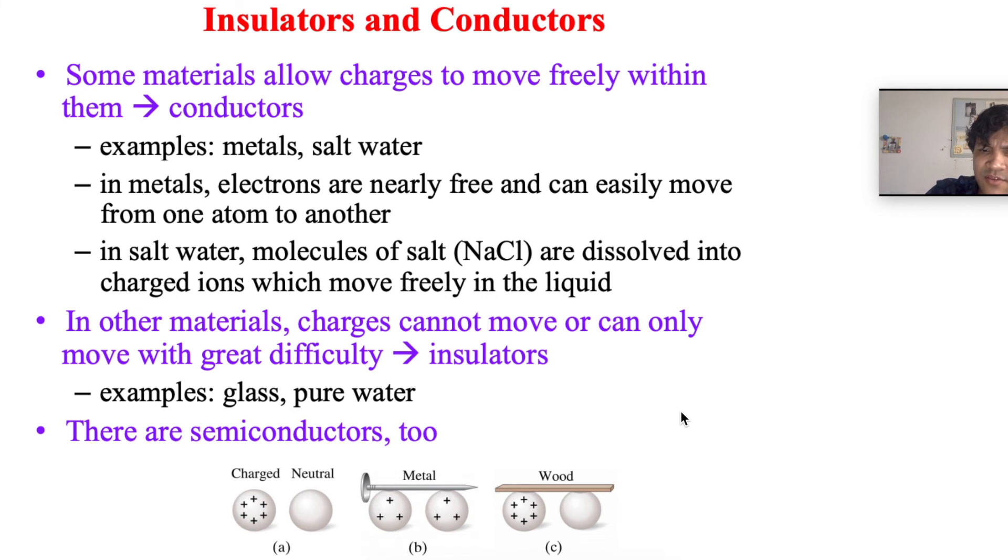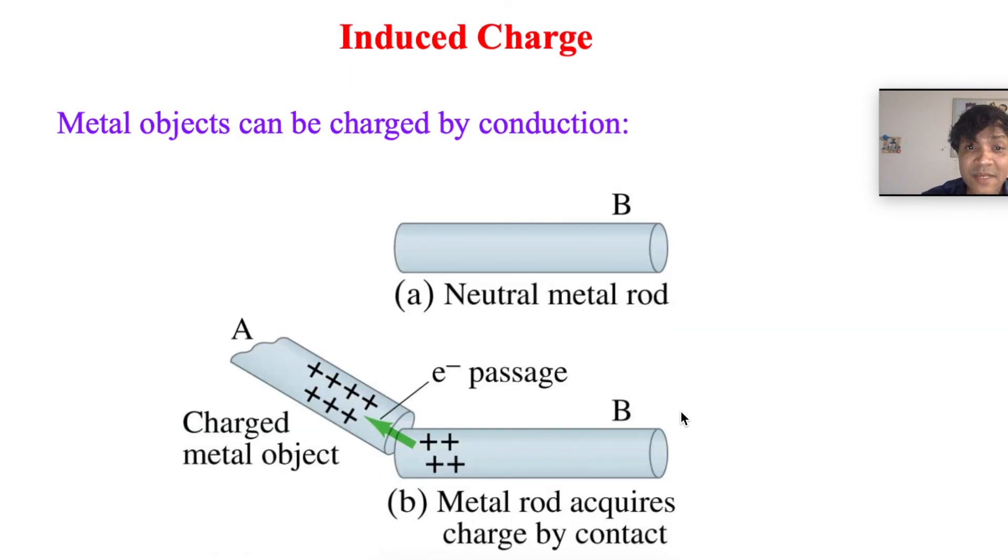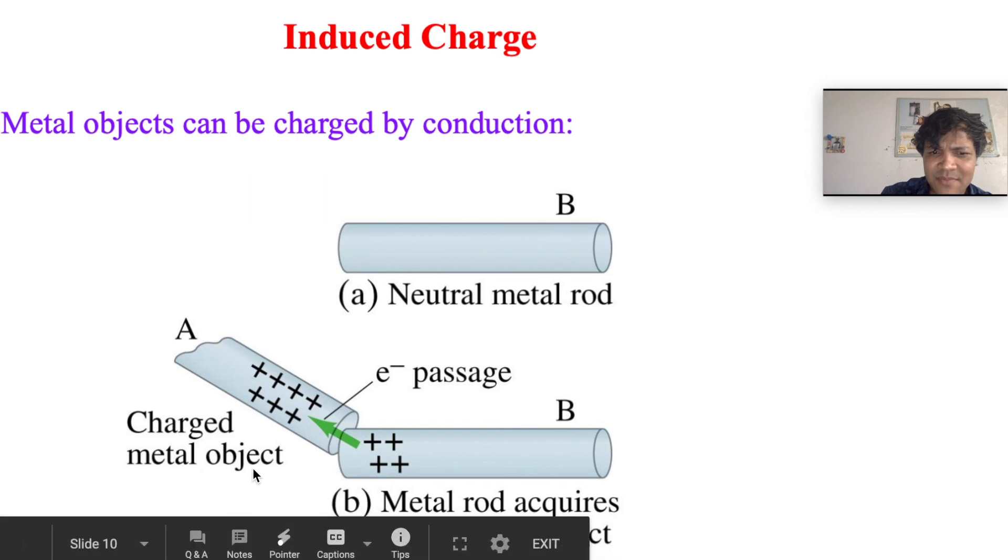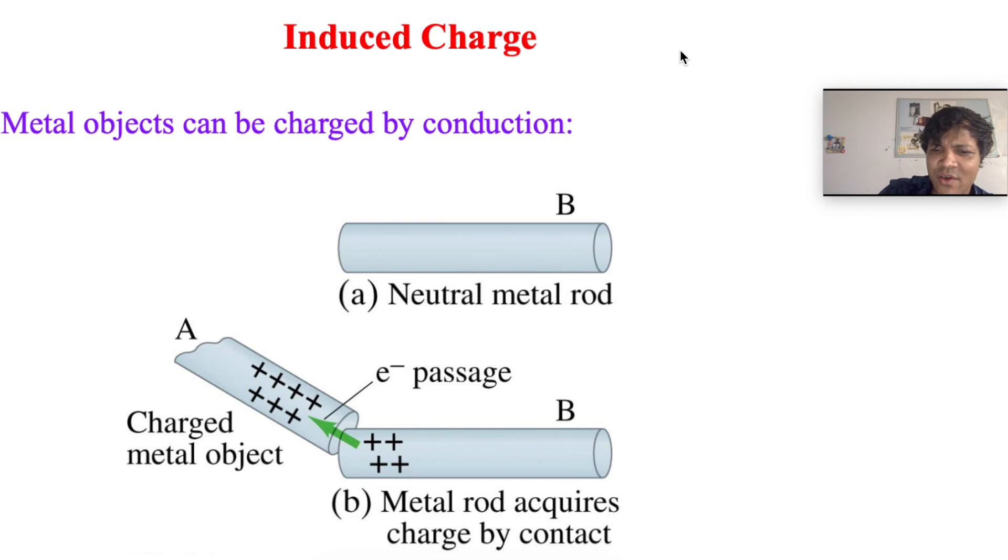Metal objects can be charged by conduction. What is conduction? Conduction is charging by touching. We have a neutral metal rod and a charged metal object, and the metal rod acquires charge by contact. Metal objects can be charged by conduction - conduction is charging by touching.